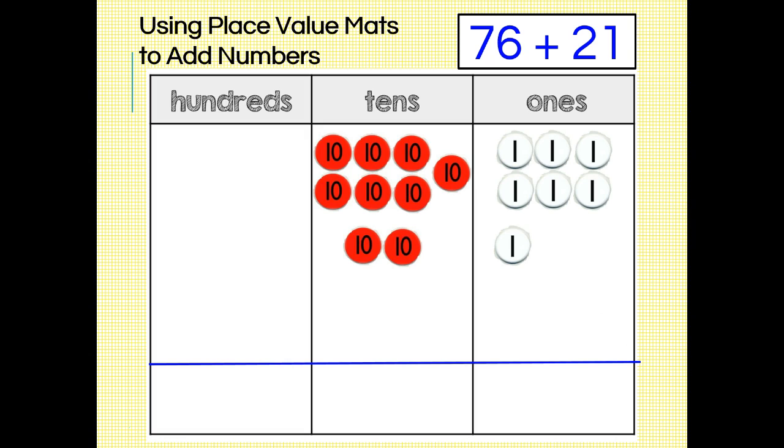How many tens and ones do we have? That's right, we have nine tens and seven ones, so 76 plus 21 equals 97.